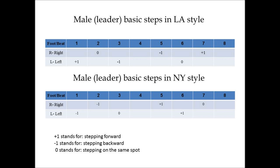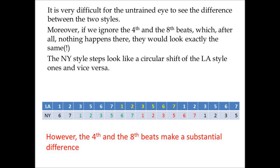But again, on the fifth beat he takes his right leg backward. On the sixth beat he steps on the same spot with his left leg. And on the seventh beat he takes his right foot back forward. You can see what goes on in the New York style. The two styles look, in fact, very similar. It is very difficult for the untrained eye to see the difference between the two styles. Moreover, if we ignore the fourth and the eighth beats — where nothing happens — they would look exactly the same. The New York style looks like a circular shift of the same steps of the L.A. style, and vice versa.